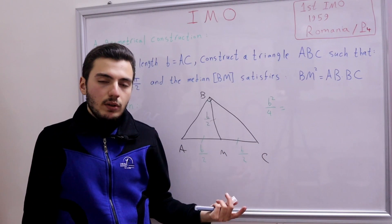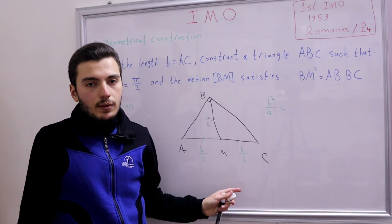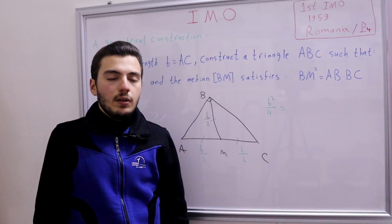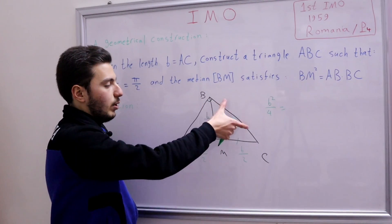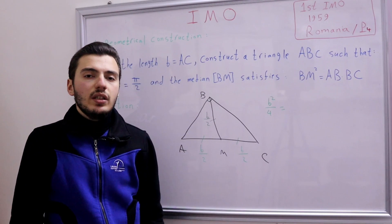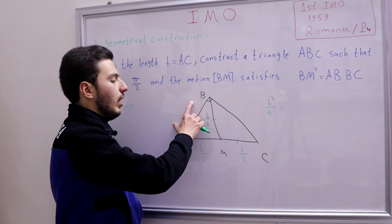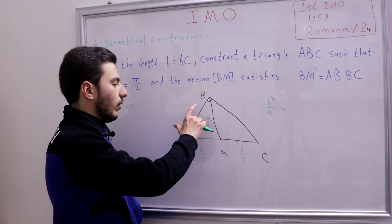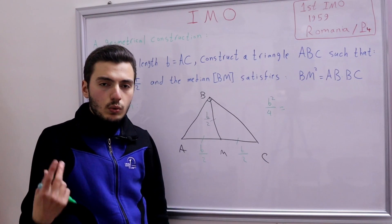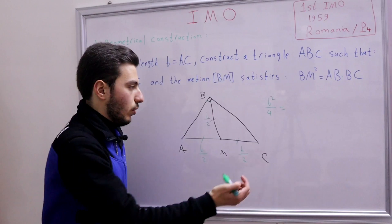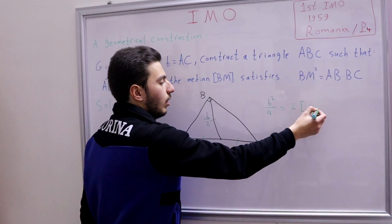What is AB · BC? We don't know anything about AB and BC individually — we only know AC = b. But since this is a right triangle, the area of triangle ABC equals ½ · AB · BC. So AB · BC = 2 × Area(ABC). Instead of writing AB · BC, we can write two times the area of triangle ABC.